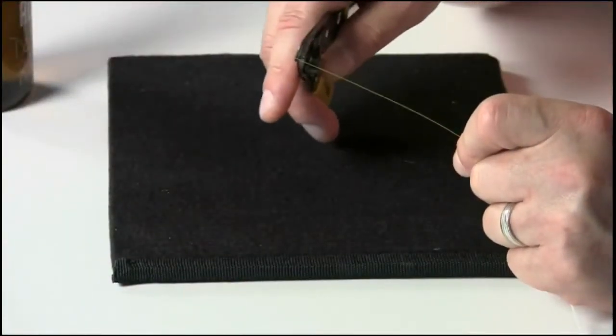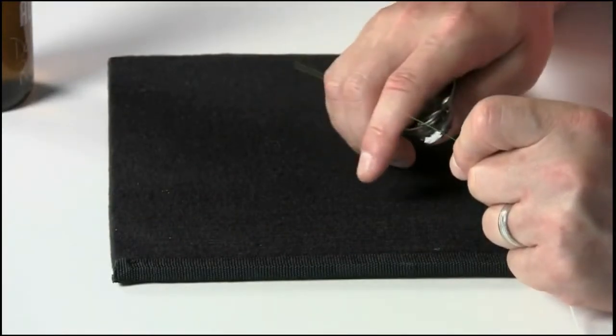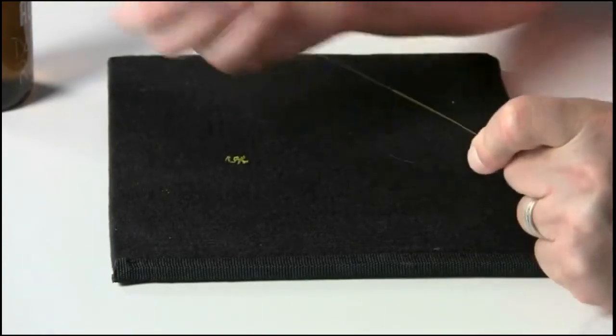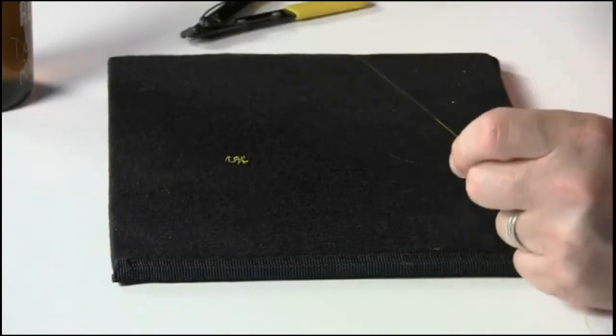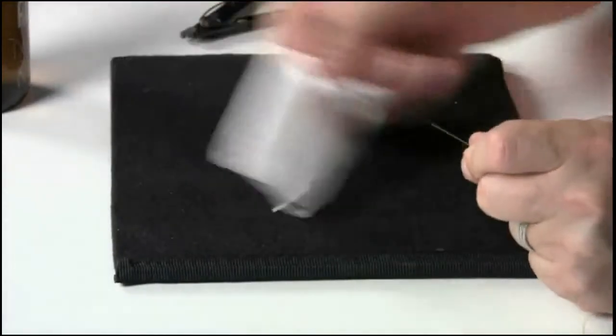You would strip the cable approximately 30 millimeters. You need to ensure that all of the acrylate is off of the fiber cable itself. And when that is done, you use 95% or better alcohol and you clean the fiber.